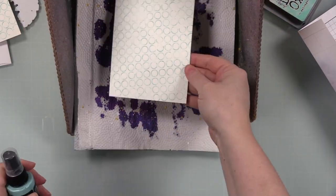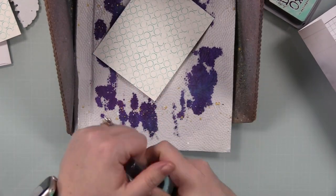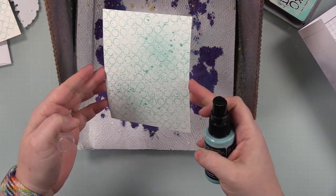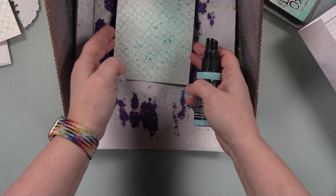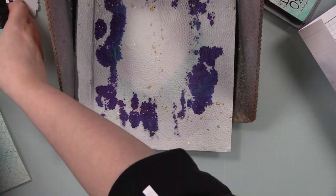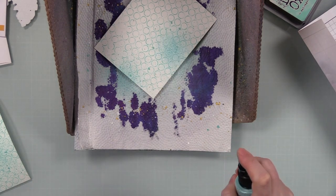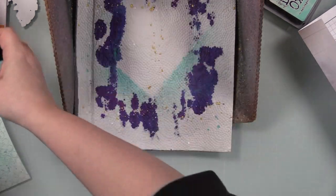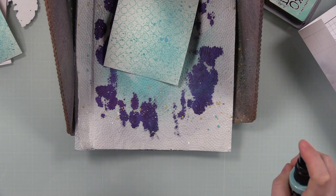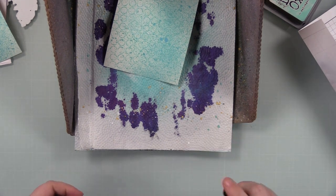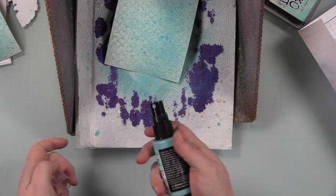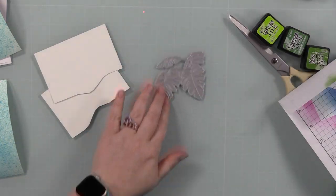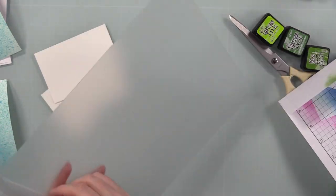I'm going to spray these backgrounds with Salvage Patina distress oxide spray. I'd shaken it up really well before I filmed. This is something I picked up from Nicole Spore's card making videos—love her videos, love her cards, chef's kiss amazing. She started doing this forever ago using a stamp or stencil and then spraying it with the same color of oxide spray. I love the look of it.